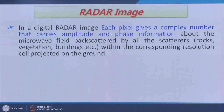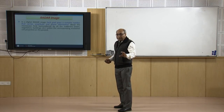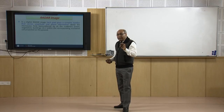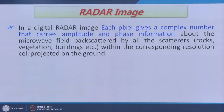How is a radar image created? Each pixel gives a complex number. It is not a simple image like passive remote sensing where a pixel has a digital number representing a reflectance or emitted value. Each pixel in a radar image is a complex number containing two major pieces of information: amplitude and phase. The microwave field is scattered by scatterers like rocks, vegetation, and buildings, and different objects scatter differently. In normal passive remote sensing the pixel value is one value, but here a complex number carries both amplitude and phase information.